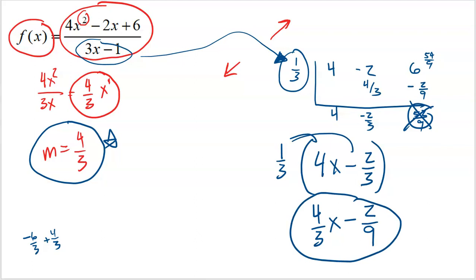The equation of the slant asymptote is y equals 4/3 x minus 2/9. When you divide the leading terms and identify the slope, use that to verify your synthetic division result. If you don't get that slope from synthetic division, multiply everything by the fractional zero to correct it and reveal the proper y-intercept.